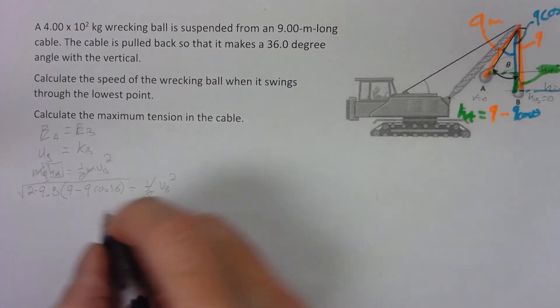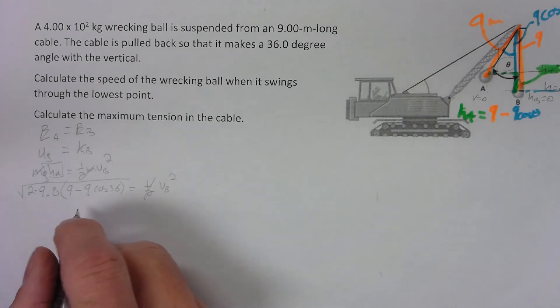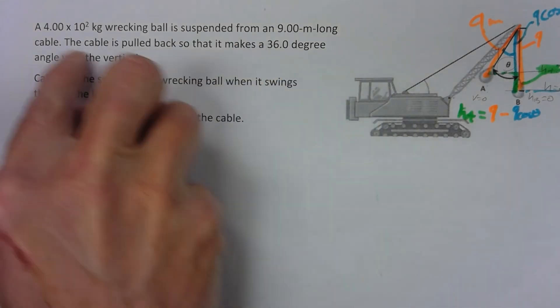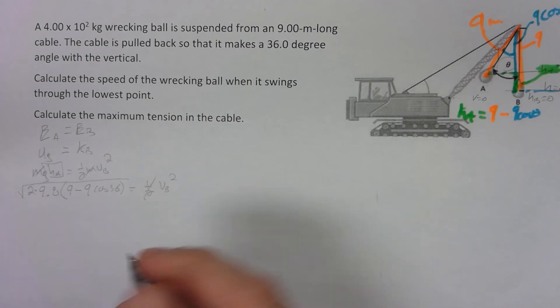Once we figure that out, plug that all in, we get that it's 5.8. We got three sig figs, 5.80. 5.80 meters per second is the velocity at B.